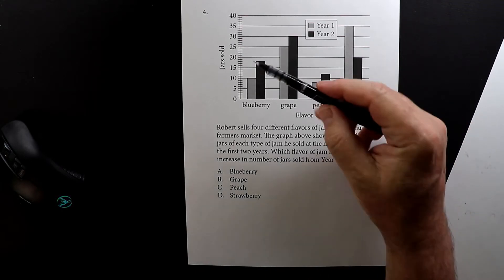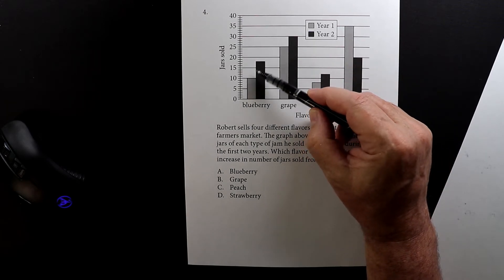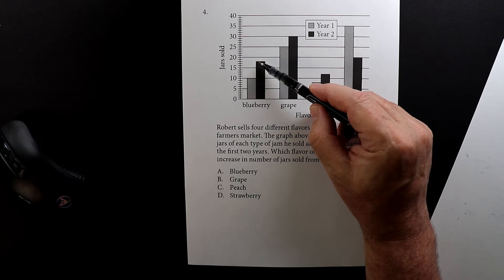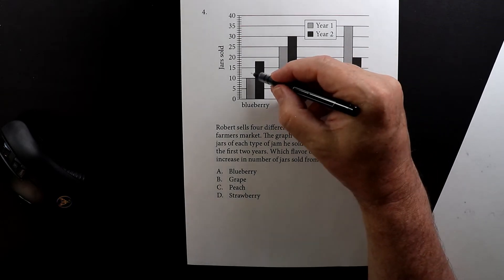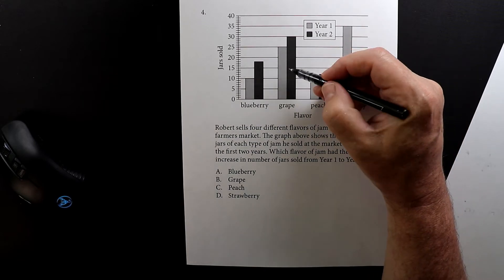So let's point at what's going on here. You can see that the first year, year one, he sold 10 and then the second year he sold 18. So you can see this area here is the amount of increase the next year.